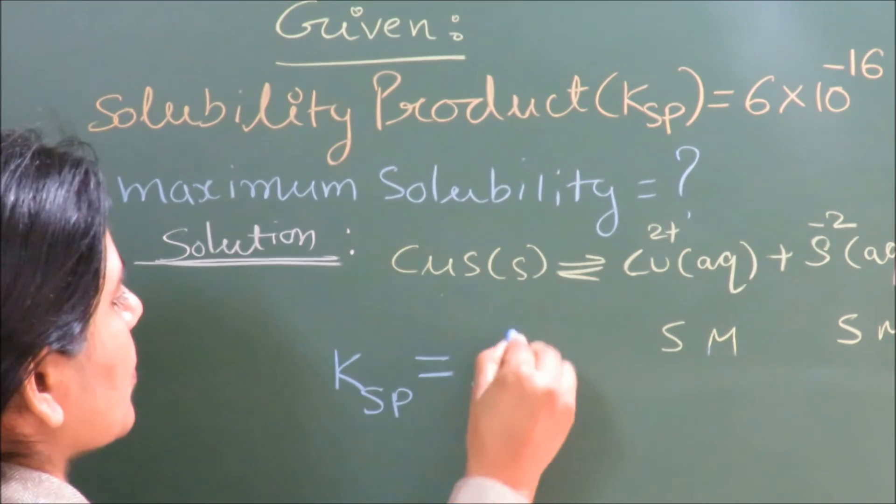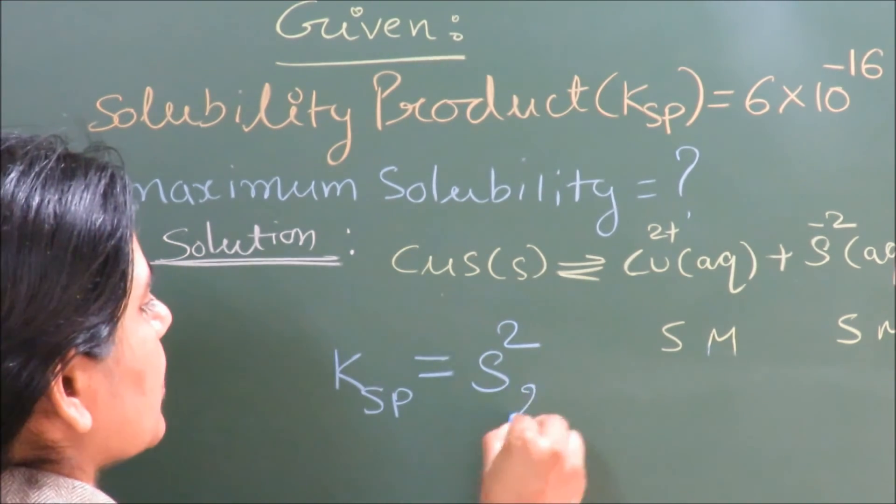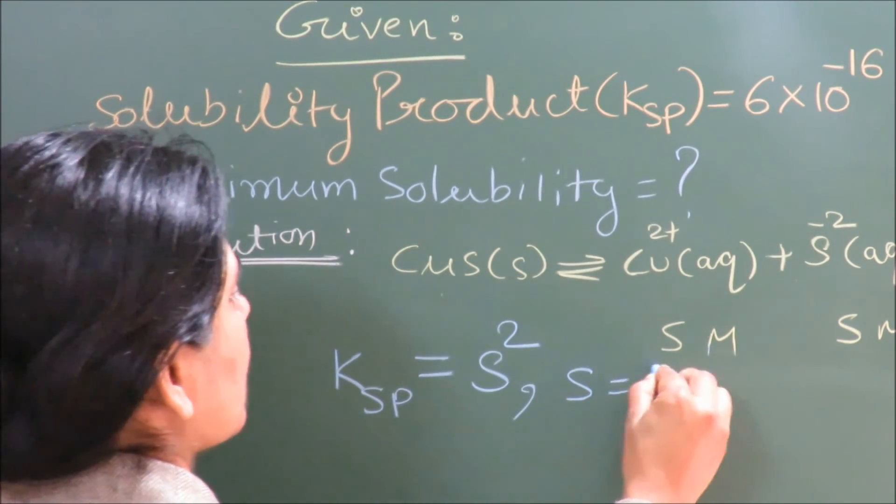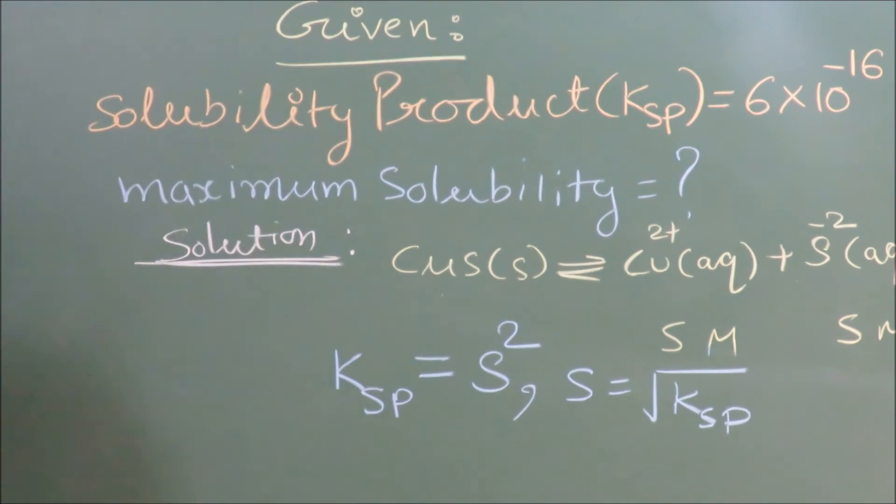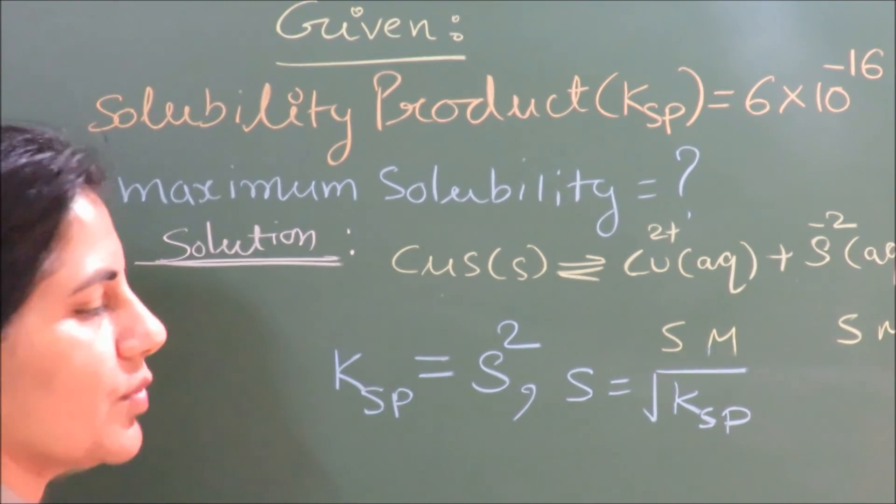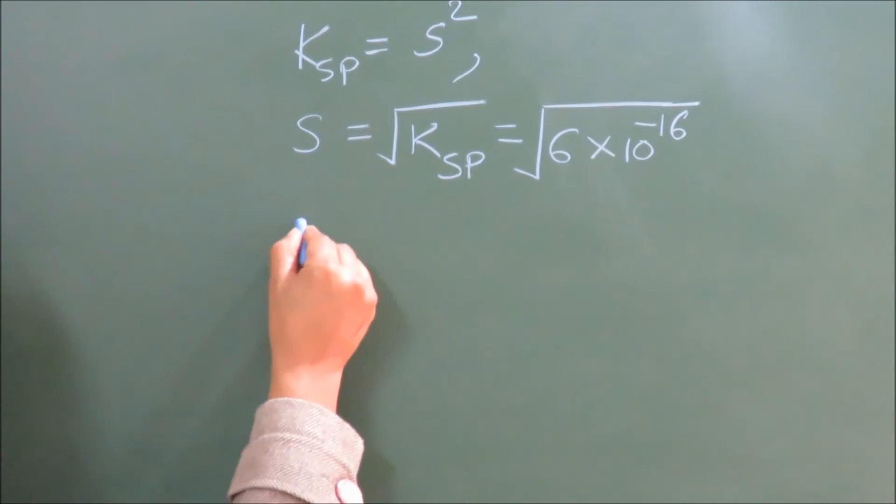Ksp = S², so S will come out to be √Ksp. If we place the value of Ksp, we can find out the value of S.